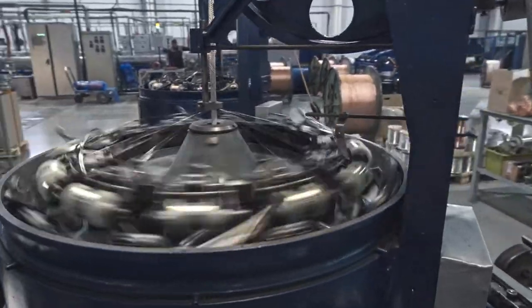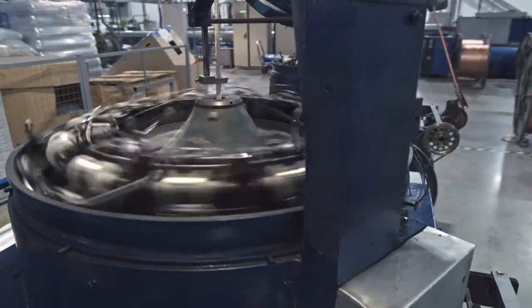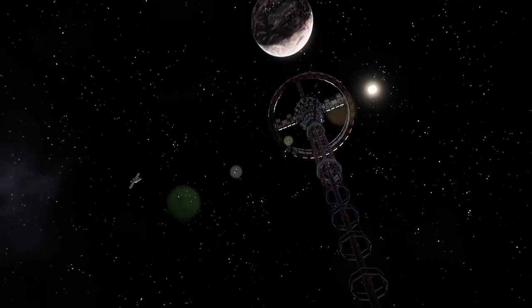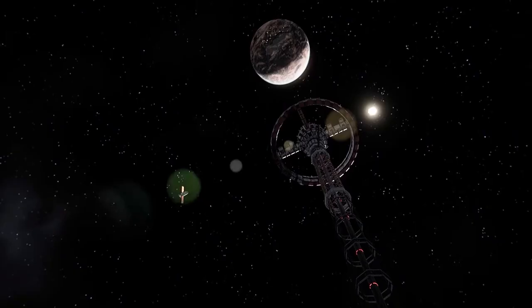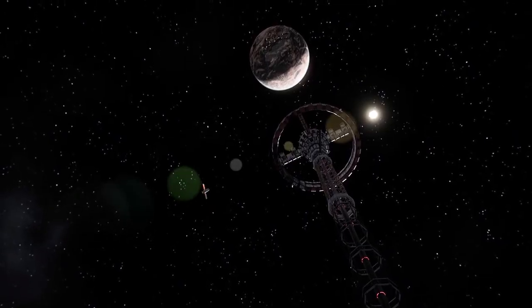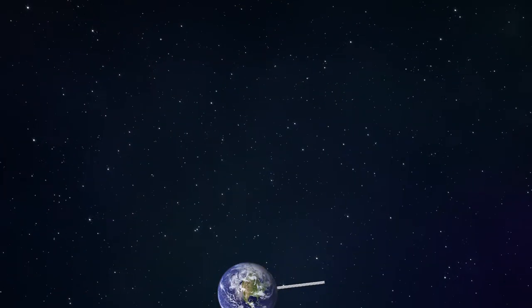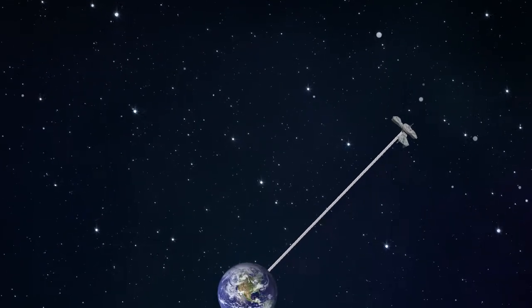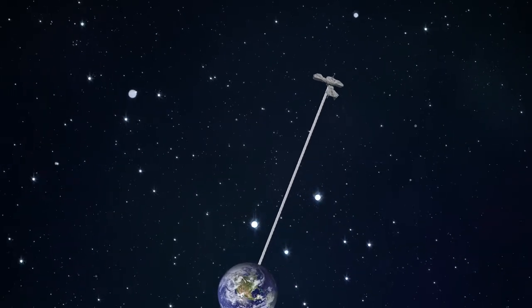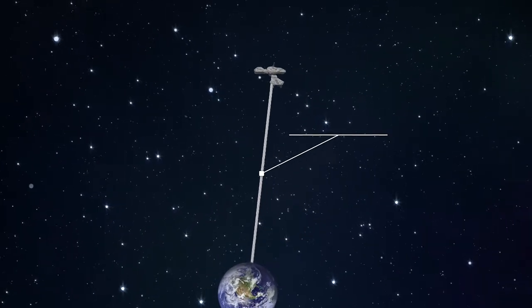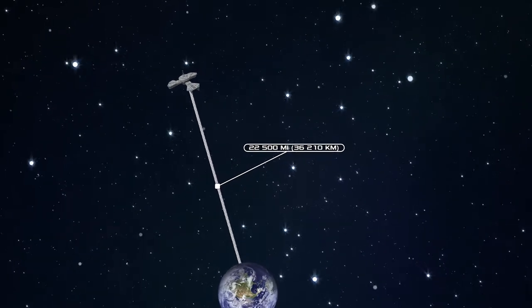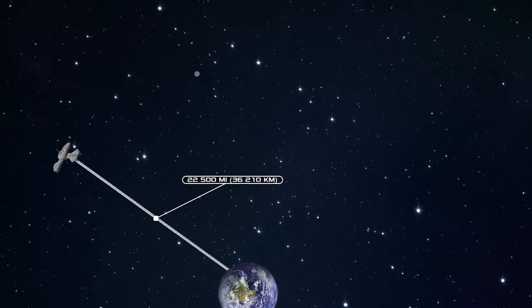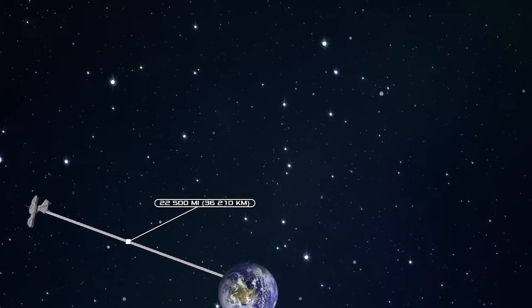Perhaps the most significant challenge in constructing a space elevator is finding a suitable material for the cable. This material must possess exceptional tensile strength, as the cable needs to support its own weight while extending from the Earth's surface to space. For example, it must reach the height of a geostationary orbit where an object suspended in space remains fixed above a single point on the equator, a distance of 22,500 miles. In addition to strength, the material must enable the cable to maintain a vertical and stable position under all circumstances.